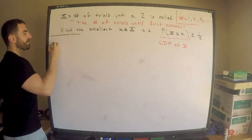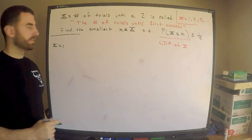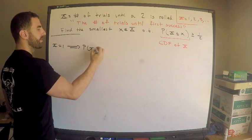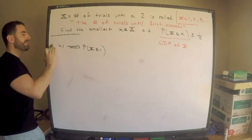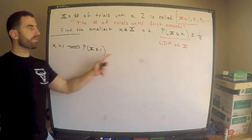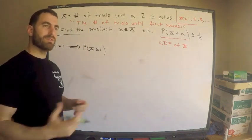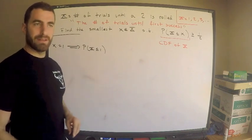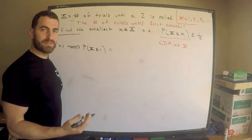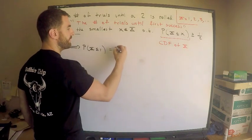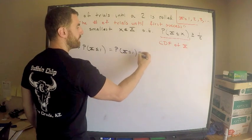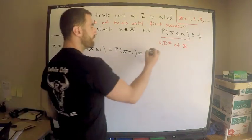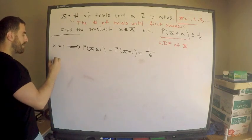Case one: what if X is one? The probability that X is less than or equal to one — since one is the smallest value of X — this is just the probability X equals one. Rolling a fair die, the probability of rolling a 2 is one sixth.